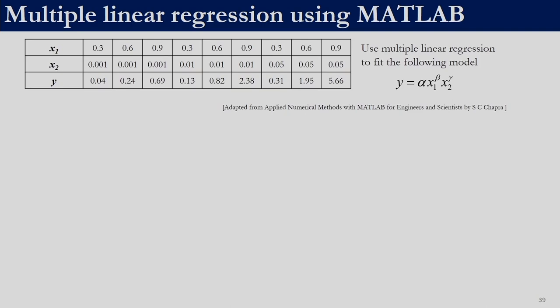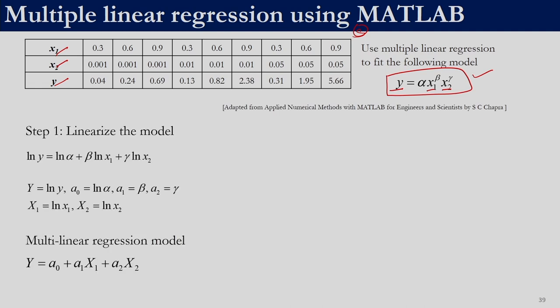Now let us look at how to solve a multiple regression problem using the same regress function. Here the model to fit is y = α·x₁^β·x₂^γ, which is nonlinear. We can directly solve it as a nonlinear regression problem, or use a data transformation technique. Taking the natural log of both sides gives: ln(y) = ln(α) + β·ln(x₁) + γ·ln(x₂), which is now a linear form.